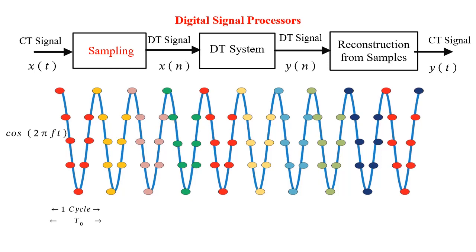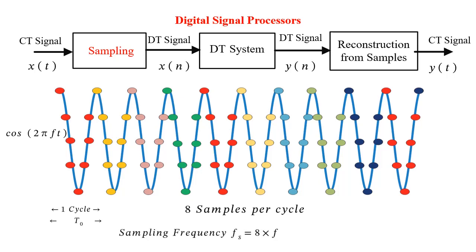If we take 8 samples in one cycle of this cosine signal, as shown by the red dots, and reconstruct the original signal by joining these dots, we observe perfect recovery of the signal. As there are 8 samples per cycle, the sampling rate fs is 8 times of f, i.e., the frequency of the signal, and the sampling interval T is 1/8 of T0, the fundamental time period.